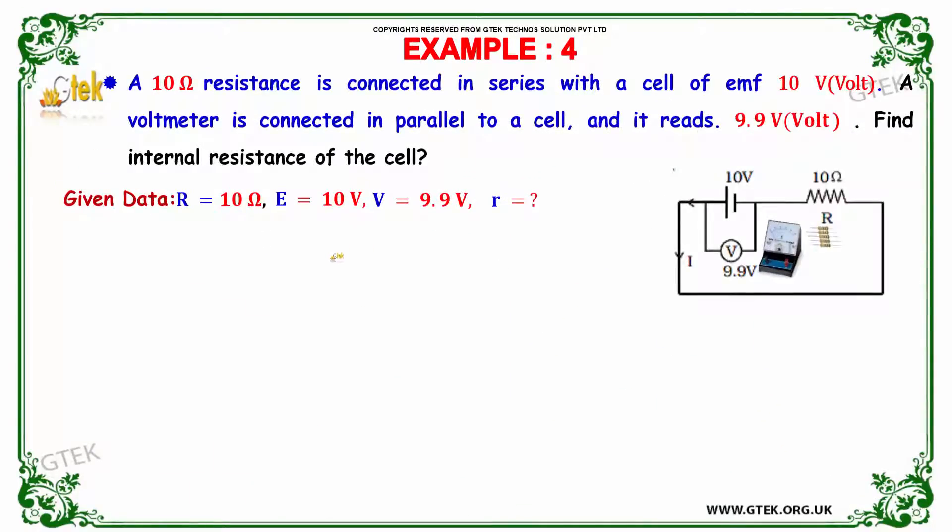We will move on to another example. A 10 ohm resistance is connected in series with a cell of EMF 10 volt. A voltmeter is connected in parallel to a cell and it reads 9.9 volt. Find the internal resistance of the cell. That's the question.